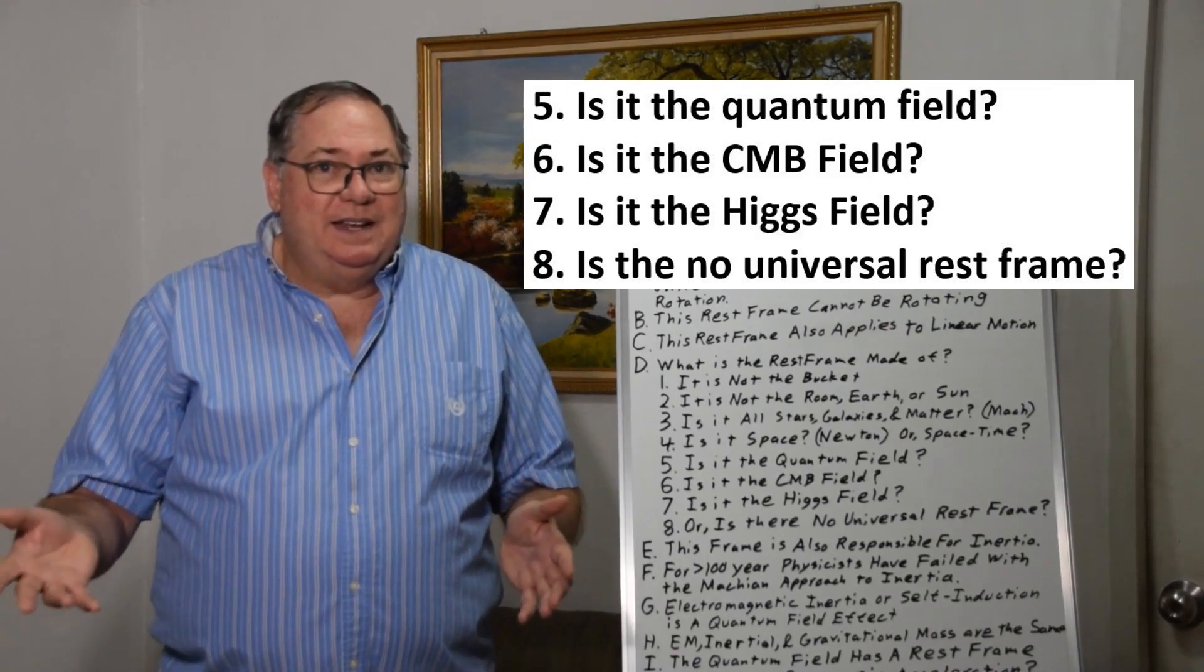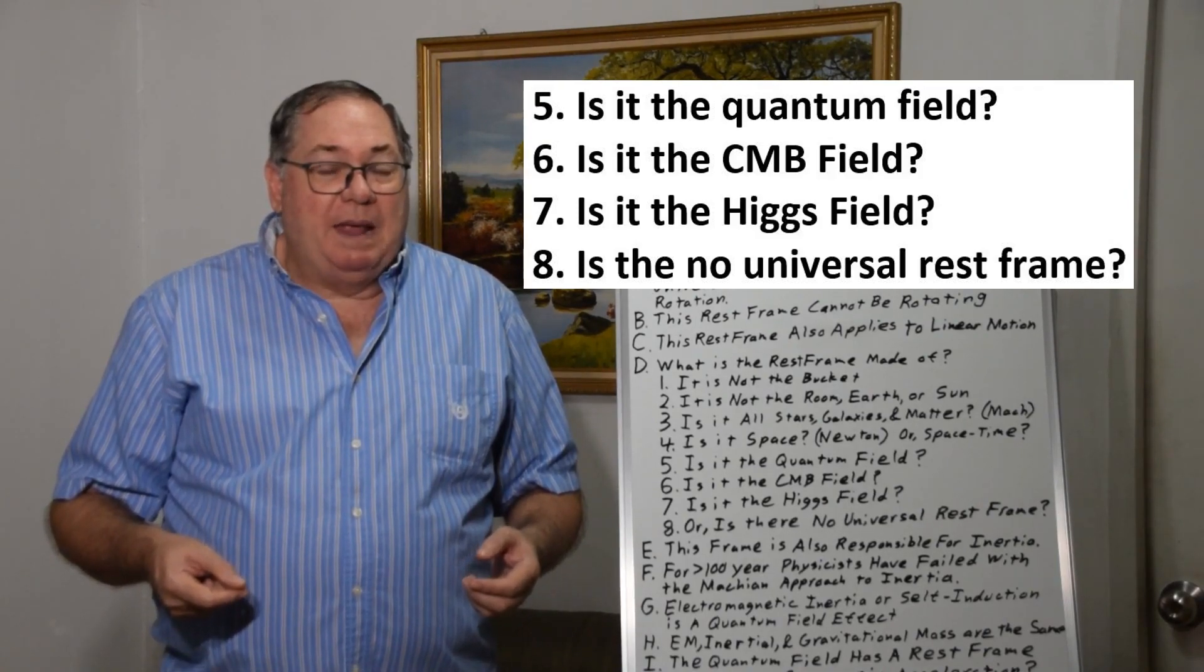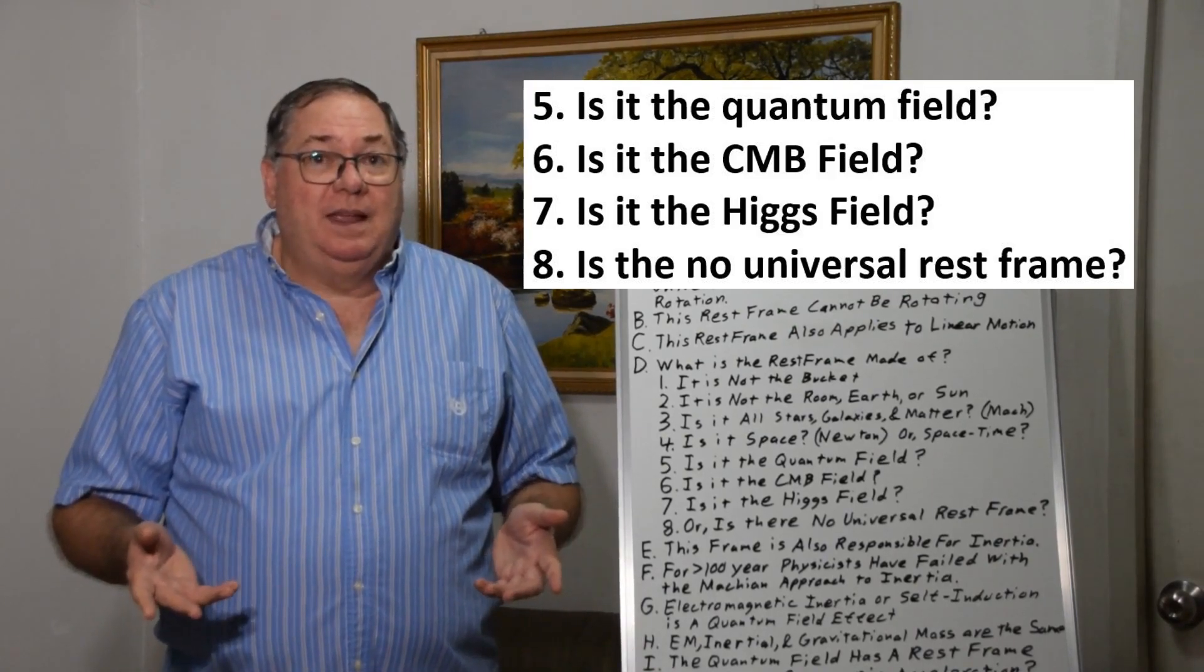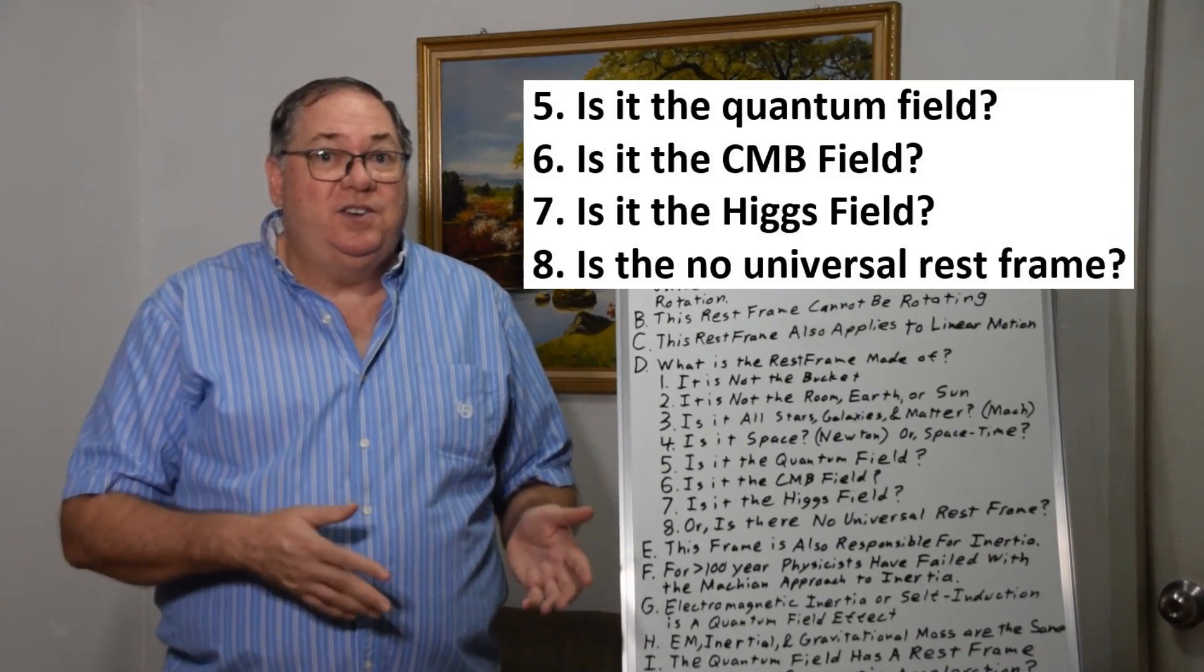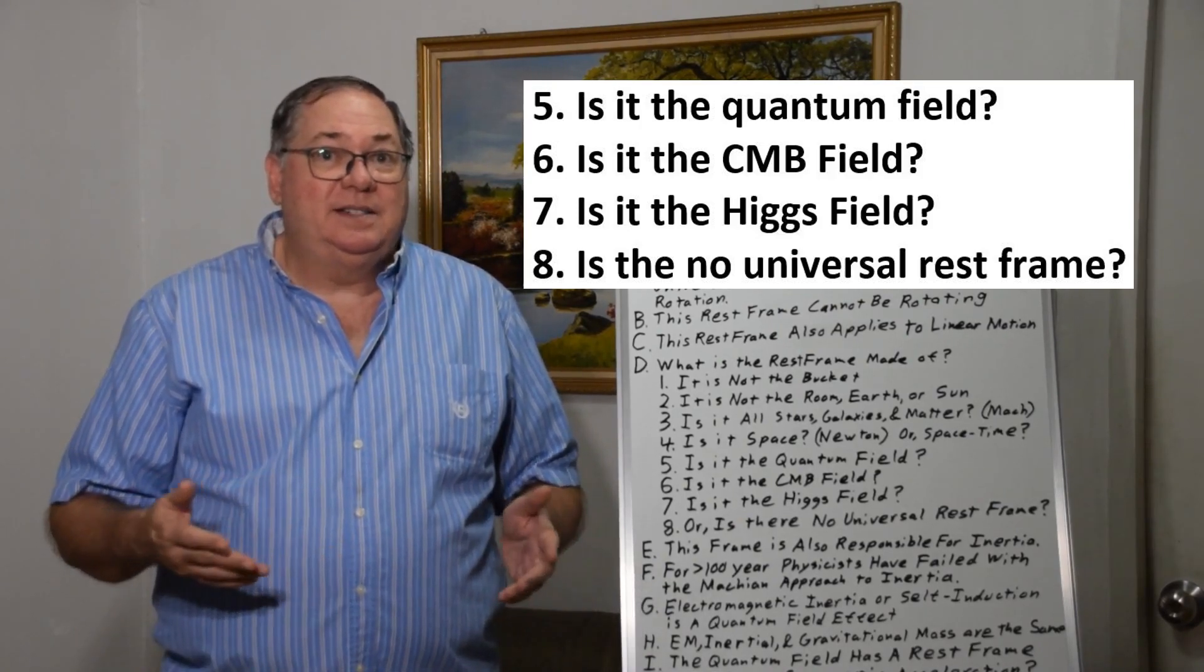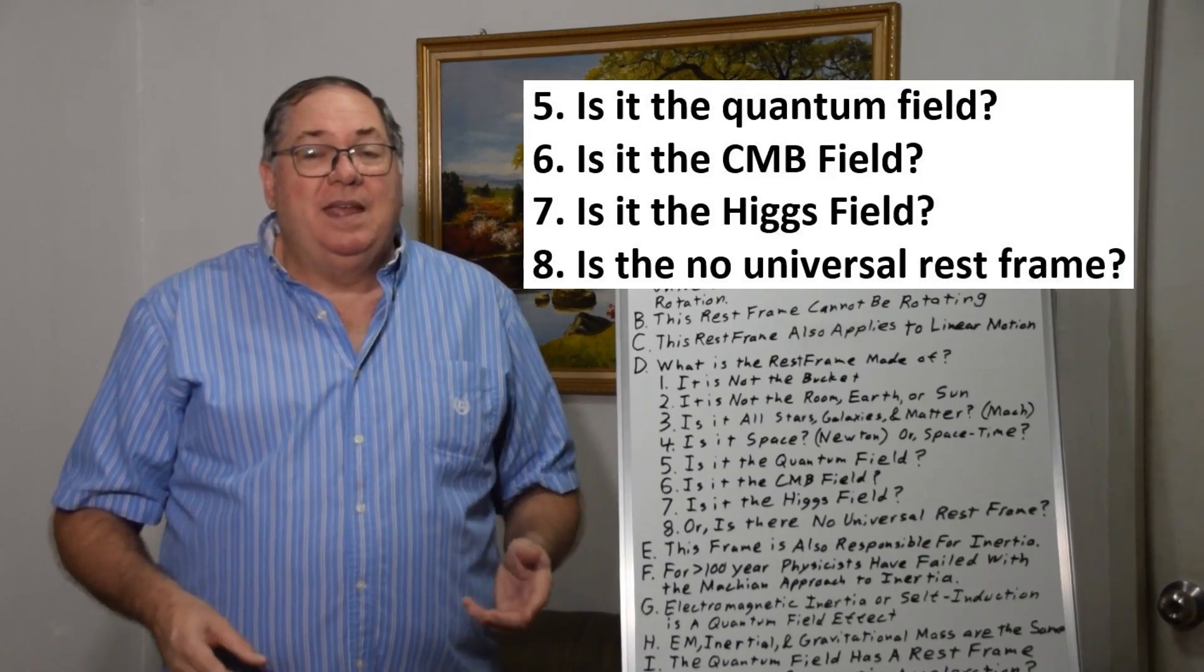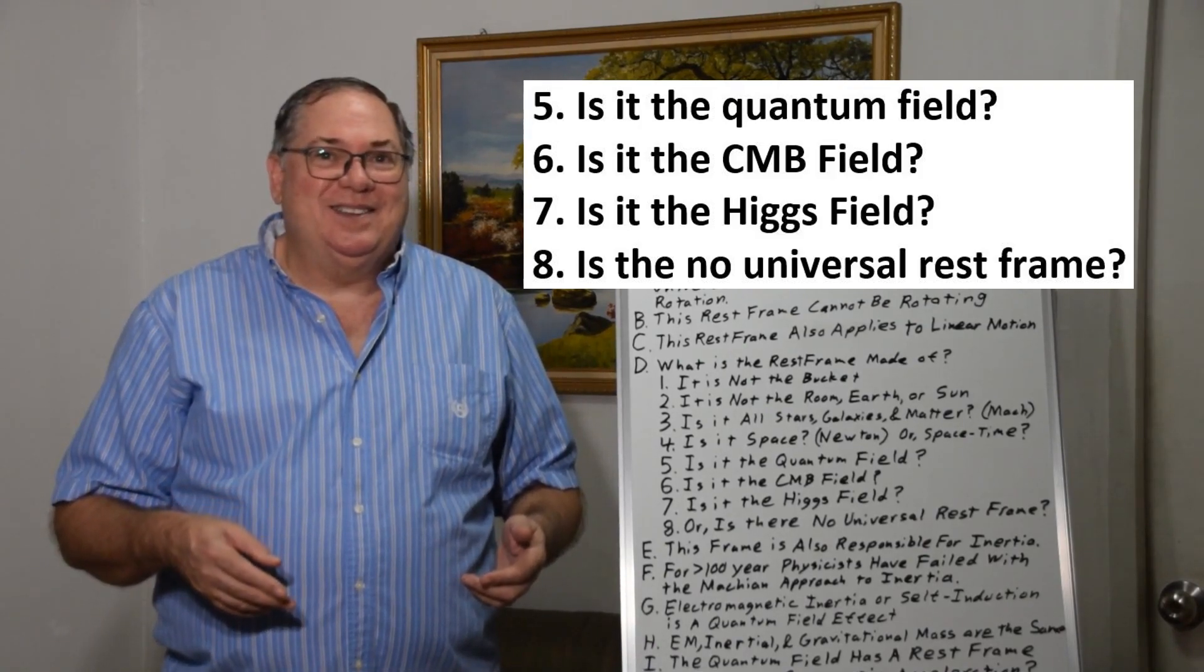There's a field that is producing the cosmic microwave background. But the rest frame of that has to be the same as a quantum field. Or maybe you believe in the Higgs ether. And if you believe in the Higgs ether producing mass, then maybe it produces inertia, and then it provides the rest frame. Although the Higgs ether has to have the same rest frame as the quantum field in the cosmic microwave background. So, we're all talking about the same thing. And thanks to the commenter who told me the term Higgs ether.